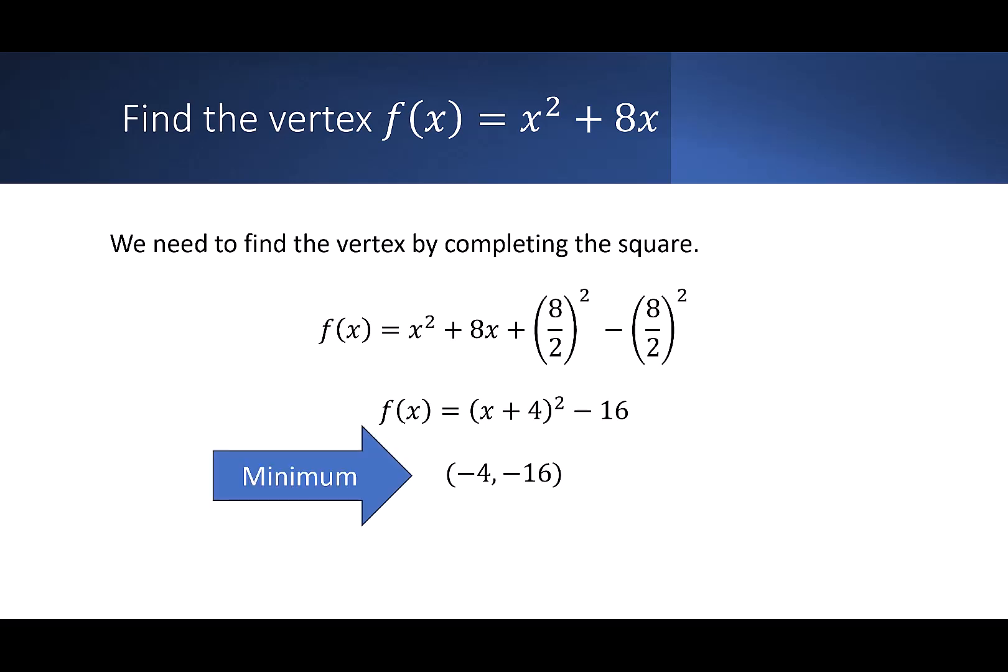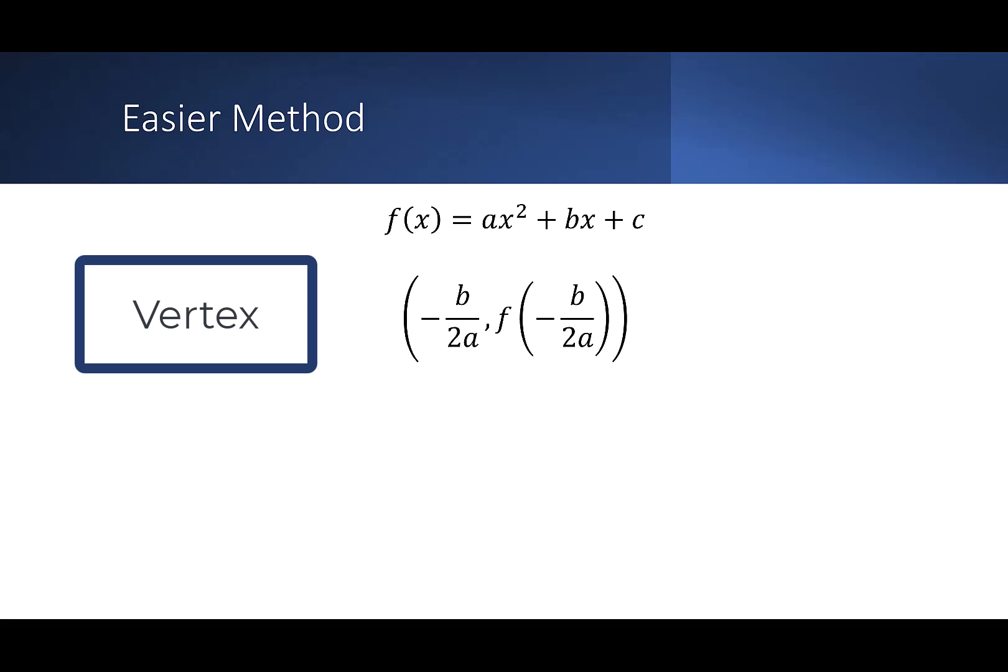And remember, we said this is a minimum. Our easier method is to look at f(x) = ax² + bx + c, and use the formula: -b/2a, f(-b/2a) gives us the coordinates of the vertex.